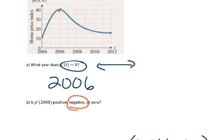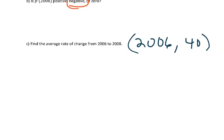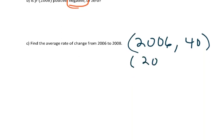And then if we go back here, we want 2008, which is right here. It looks like the home price index is 25. So in 2008, it's 25.